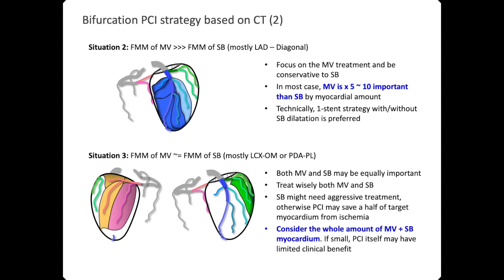Situation 2: if the myocardial mass of the main branch is much larger than that of the side branch — mostly LAD-diagonal bifurcations — please focus on main branch treatment and be conservative with side branch treatment, because the main branch is much larger. Technically, a one-stent strategy with or without side-branch treatment would be preferred.